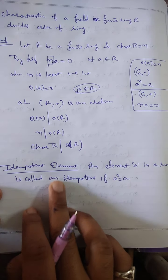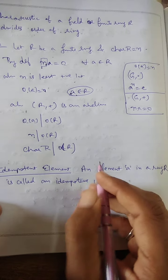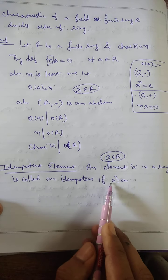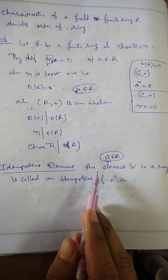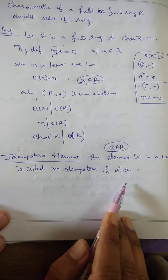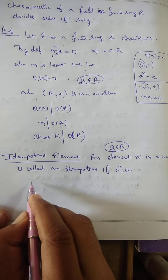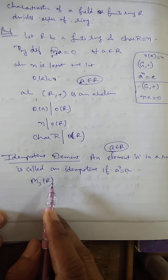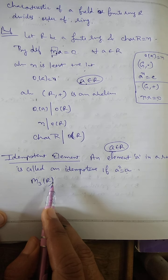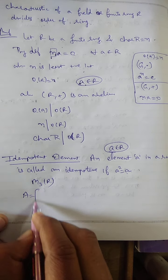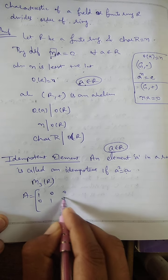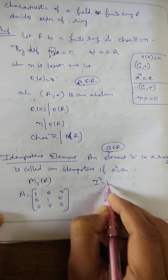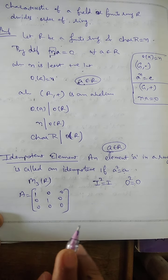Next definition: idempotent element. An element A of a ring R is said to be idempotent if A squared equals A. If squaring the element gives back the same element, we call it an idempotent element. For example, consider M3(R), the set of all 3×3 square matrices, which forms a non-commutative ring with identity. The identity matrix I squared equals I, and the zero matrix squared equals zero, so both are trivially idempotent elements.